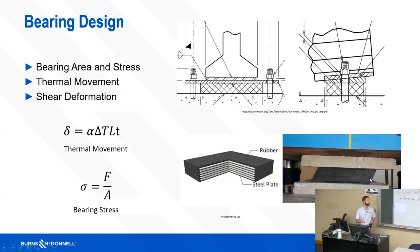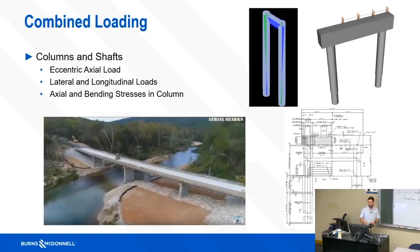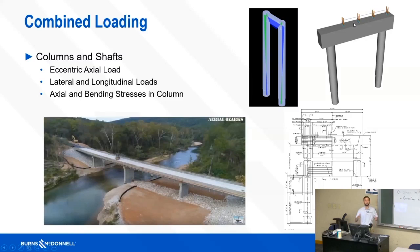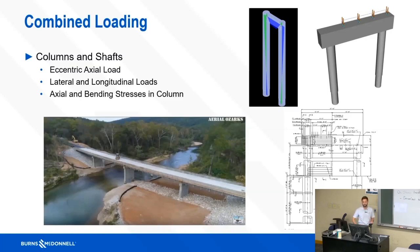There are also combined loading scenarios on substructure elements like columns and drilled shafts. All the loading from the girders above creates high axial stresses, but it's not always centered — you have an eccentric load. If you push straight down on a column it goes straight down, but if the load is offset it bends, so you have axial force and bending force combined. On top of that, you design for lateral and longitudinal loads from earthquakes, wind, barges, and more.